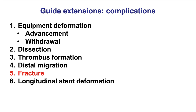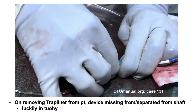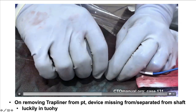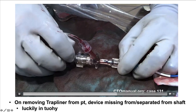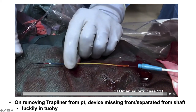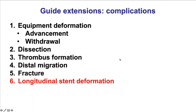Fracture of the guide extension can occur. This is an example of a case in which there was fracture of a Trapliner, but fortunately the Trapliner was almost all the way back to the Y connector. By removing the Y connector, they were able to remove the distal segment of the guide extension without having to retrieve it from the body. Finally, one should be very careful advancing guide extensions through previous stents, because if it catches the ends of the stent it can lead to stent deformation — and that is why using the inch-worming technique is very important.